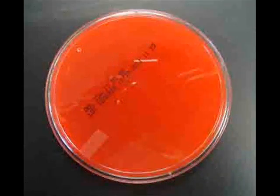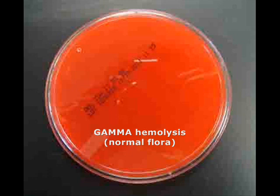Here's the bottom of a blood agar plate, and although there was growth on the top portion, when I flip that plate over and look at the underside I can see that the medium has not changed at all. It looks as if it were a brand new plate of blood agar. This means the bacteria growing there do not produce hemolytic enzymes, so this is gamma hemolysis, indicating normal flora.